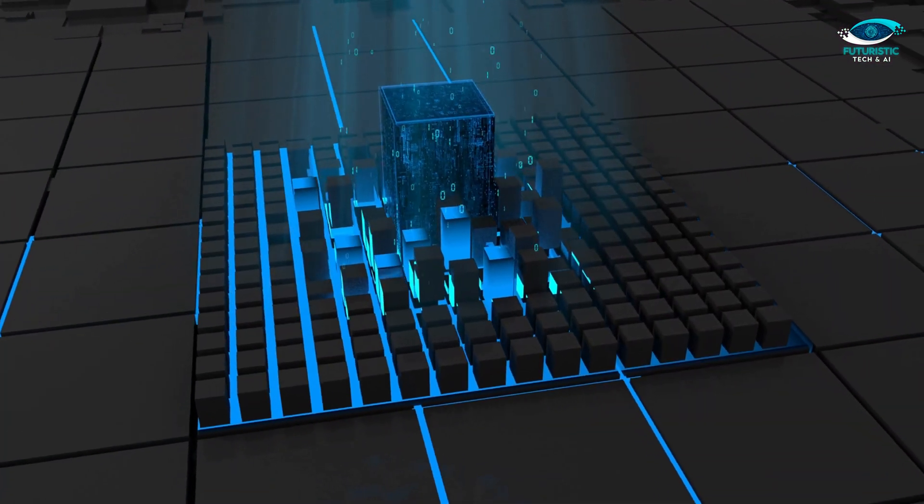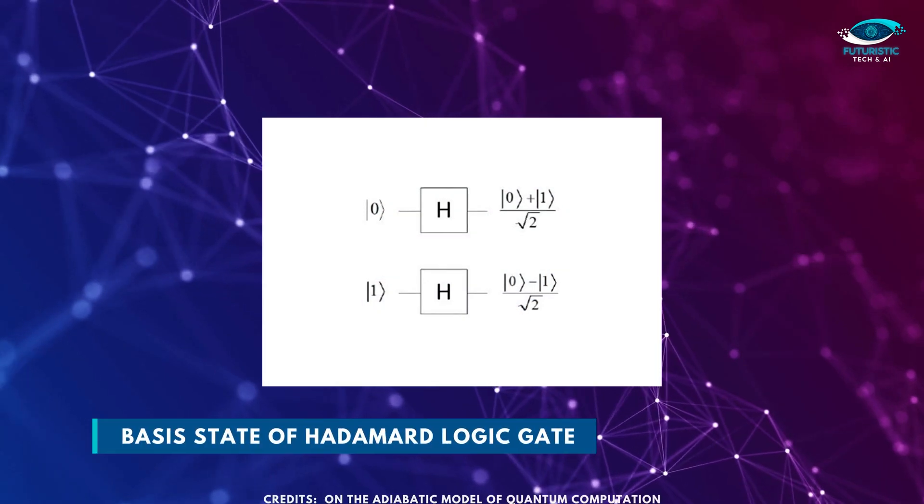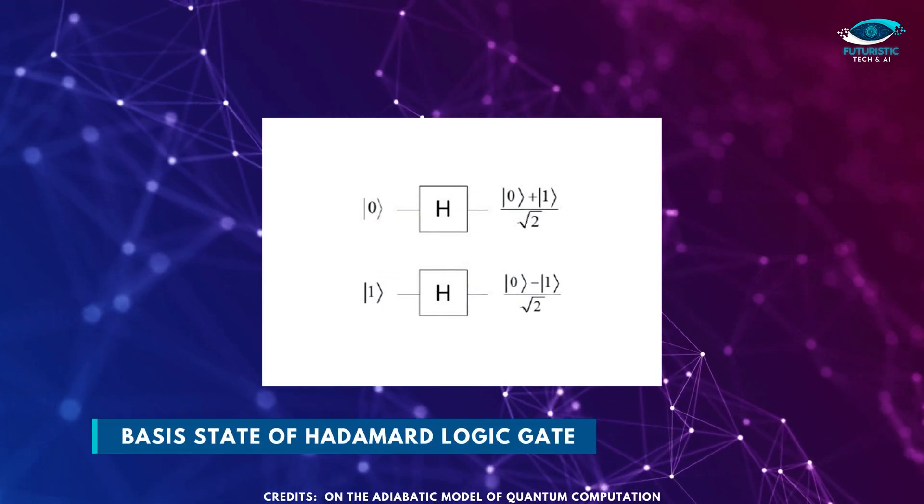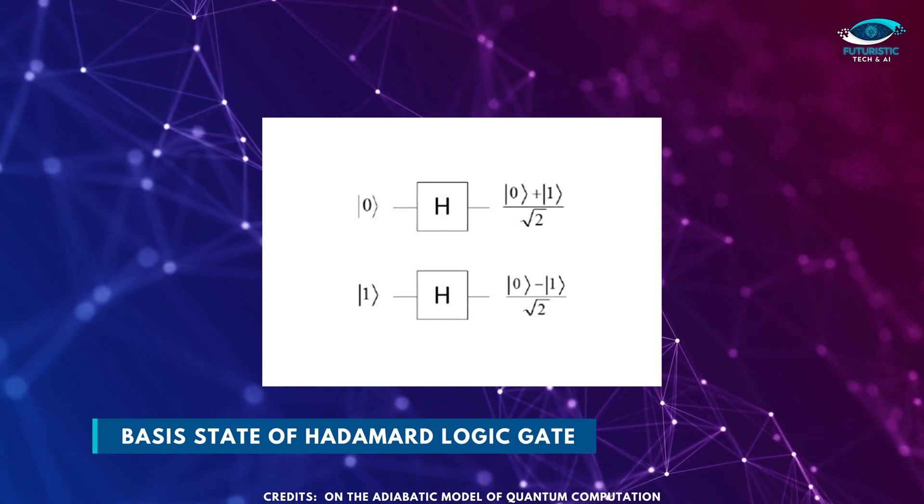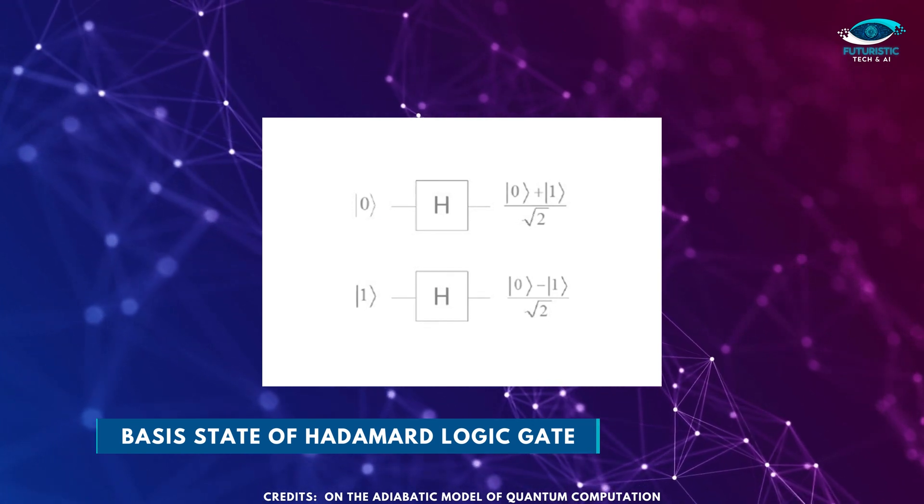The Hadamard gate is a single-qubit operation that maps the basis state 0 to 0 plus 1 divided by 2 and 1 to 0 minus 1 divided by 2, thus creating an equal superposition of the two basis states.